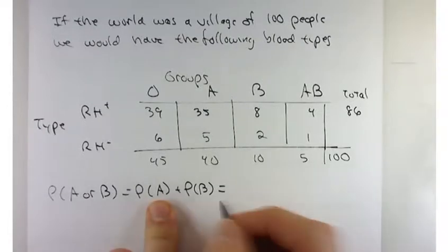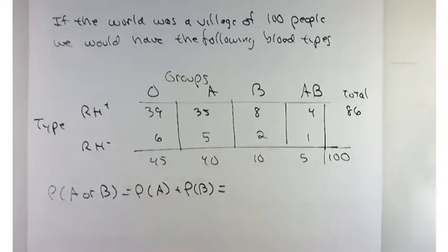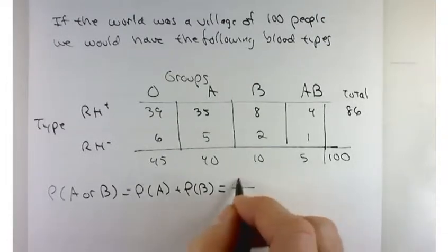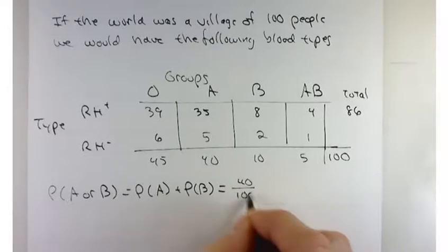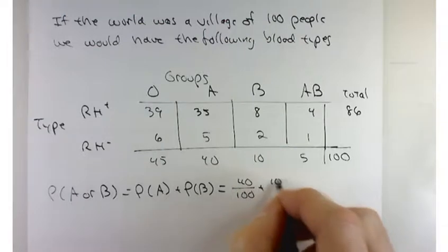What's the probability of randomly selecting somebody from these 100 people that has a blood type of A? Yeah, 40 over 100 or 40%. Likewise for B, 10%.